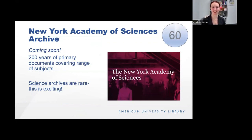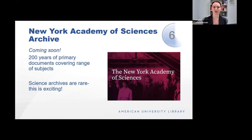The New York Academy of Sciences archive — it is no longer coming soon. We got the link on Monday, it is here. It has 200 years of primary source documents covering a range of subjects including botany, chemistry, civil and human rights, climate science, education in the sciences, and environmental studies. Science archives are really rare, so this is especially exciting. The highlights of the archive include field notes, records, and maps from the Academy's three-decade scientific survey of Puerto Rico and the Virgin Islands; documents by the Committee on the Human Rights of Scientists; records of the Harbor Project and its impact on industrial pollution; and works by botanist Nathaniel Lord Britton and the New York Botanical Gardens.